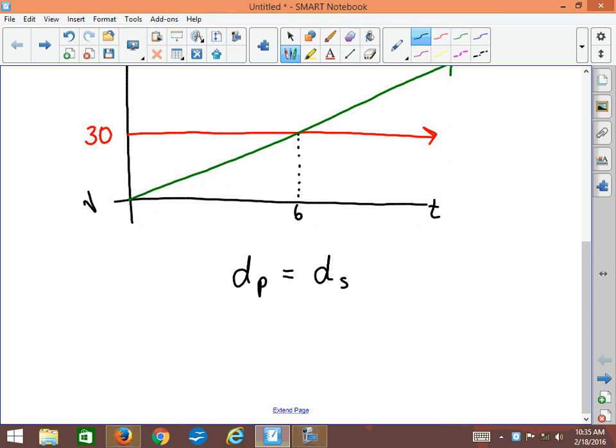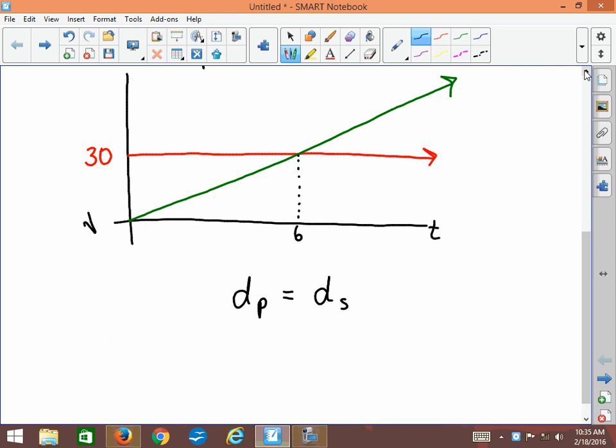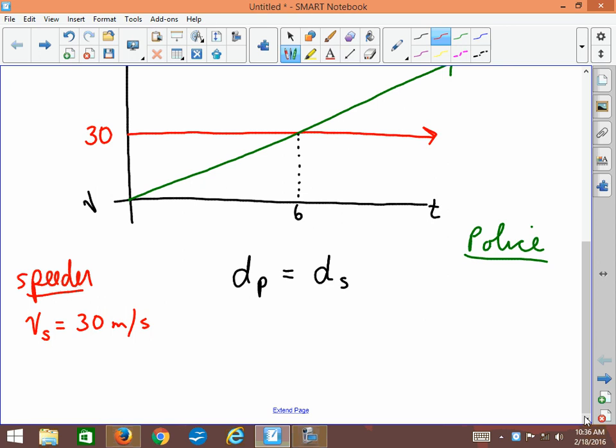Once we get that far, it's probably a good idea to try to pull out of the graph as much information as we can, so we know what we have to work with. I'm going to write information about the speeder over here on this side, and information about the police car over here on this side. The speeder is the easiest guy because he's not accelerated. He has a speed, Vs, and it's 30 meters per second. There will also be a certain amount of time involved. I don't know that, so I'll put ts for the speeder and leave it empty. There will also be a displacement for the speeder, ds, which I don't know, so I'll put a question mark.